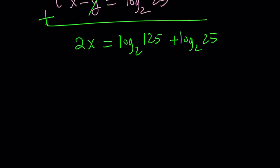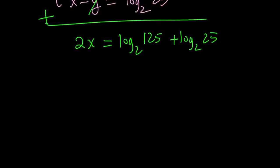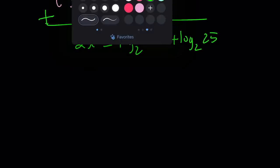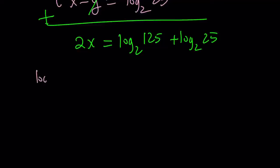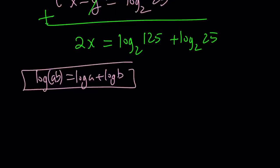We can divide both sides by 2 to find x, but let's go ahead and combine these two logs. And we have an interesting property called the product property. If you have log a plus log b, that can be written as log of ab. So we have the sum of two logs, which can be written as the log of a product.